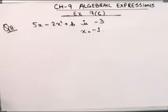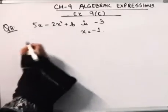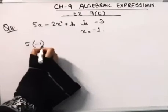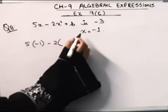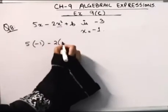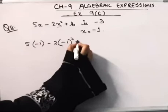What we have done in question number 7, this is on the same pattern. What I will do here is I will put -1. So, this will be 5 into -1 minus 2, again I will put x as -1 square plus b.